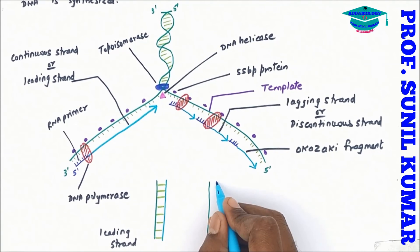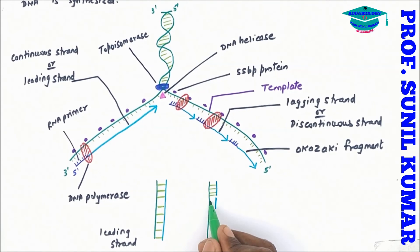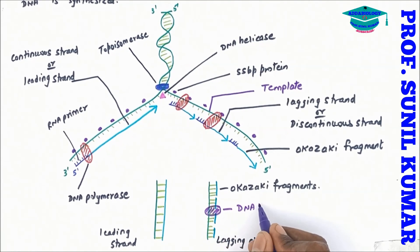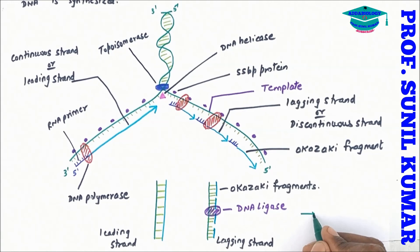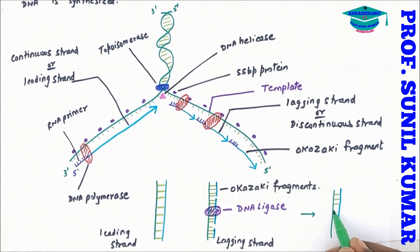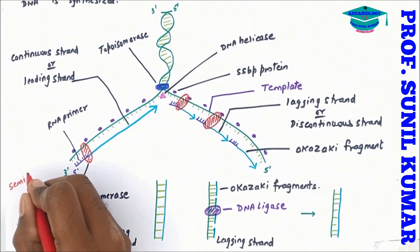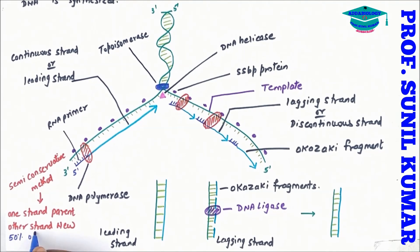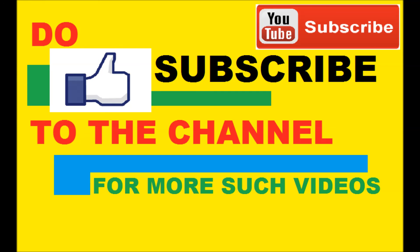On the leading strand, DNA is synthesized at a faster rate continuously. On the lagging strand, DNA is synthesized as broken Okazaki fragments. These fragments are joined together by the special enzyme DNA ligase, which sticks all the Okazaki fragments to make a complete DNA strand. Finally, the RNA primer is removed. This is the semi-conservative method of DNA replication where 50 percent is the parental DNA and 50 percent is the newly synthesized strand.